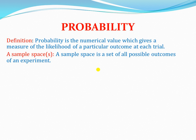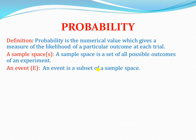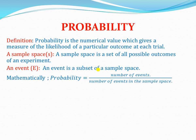On top of that, we can also add the definition of a sample space. A sample space is a set of all possible outcomes of an experiment. In addition to this, we can also talk about what an event is. An event is simply a subset of a sample space. Mathematically, probability is given by the number of events out of the number of events in the sample space. So you simply get the number of events, then divide by the number of events in the sample space, as we shall see in the examples that follow.